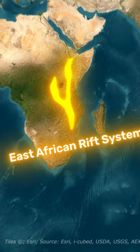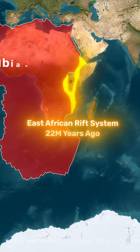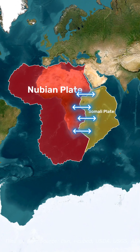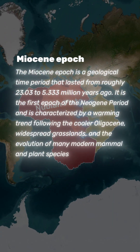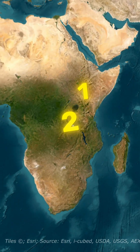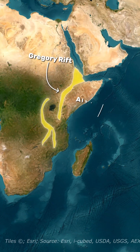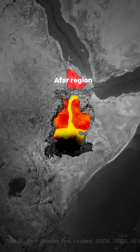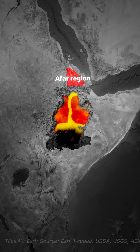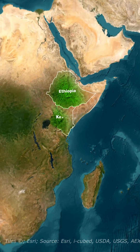The East African Rift System began around 22 million years ago when the Nubian Plate and Somali Plate began drifting apart. That divergence began in the Miocene Epoch and created two main branches: the Eastern or Gregory Rift and the Western or Albertine Rift. Mantle plume activity beneath the Afar region weakened the crust and caused volcanic flooding that built the higher ground of the Ethiopian and Kenyan plateaus.